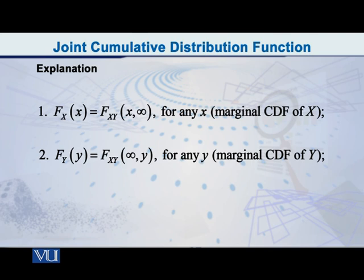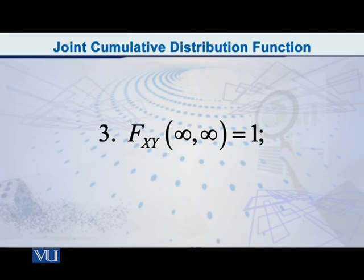Equally importantly, let me discuss with you the third property, which reads as follows: capital F of the random vector XY at the point infinity comma infinity is equal to 1. The fact is that if you integrate both variables from minus infinity to infinity, only then you will get this expression, capital F of XY at infinity, infinity.